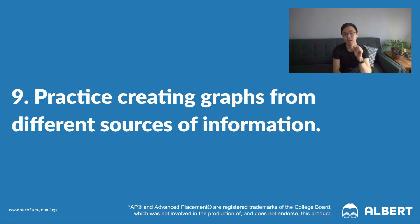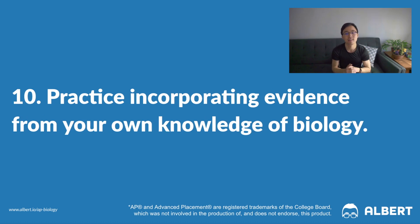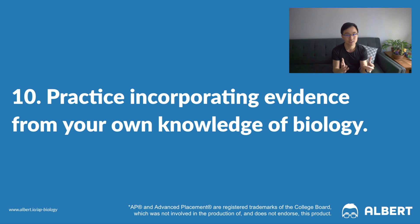Tip number nine: make sure that you're practicing creating graphs from different sources of information. For example, you may have to draw a diagram from a narrative description. So you have to be comfortable with creating different types of graphs like bars, dual y-axis, line, semi-log, etc. Tip number 10 is to practice incorporating evidence from your own knowledge of biology. This can help you when it comes to thoroughly answering questions that ask you to justify or interpret something. Remember what we said about those two-part questions.